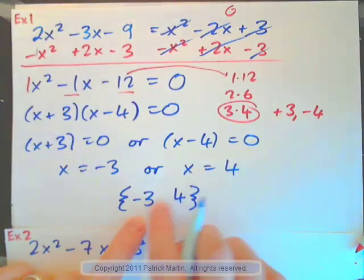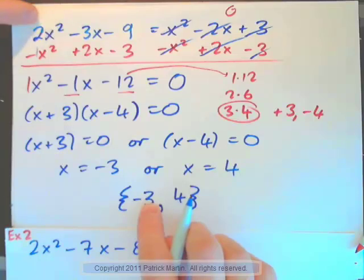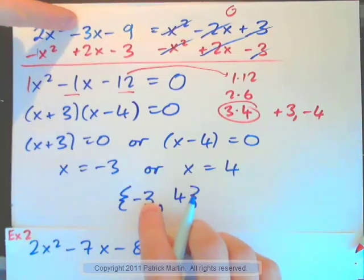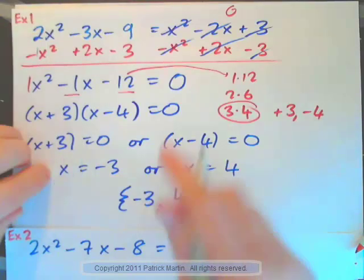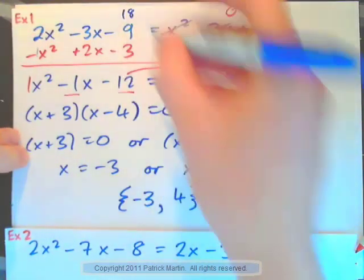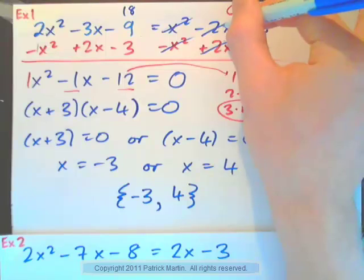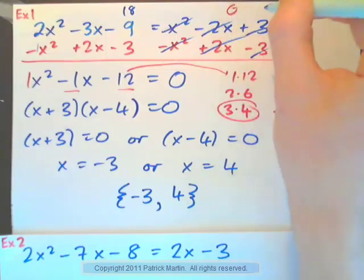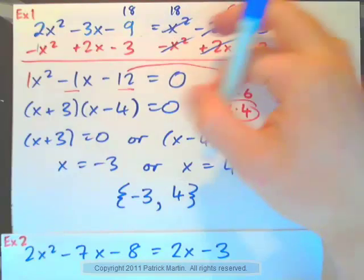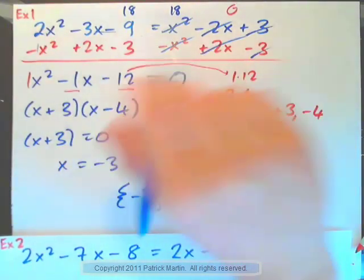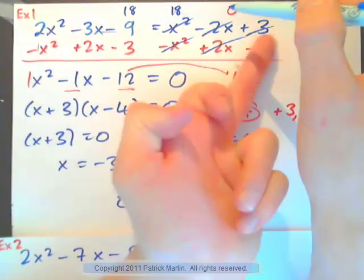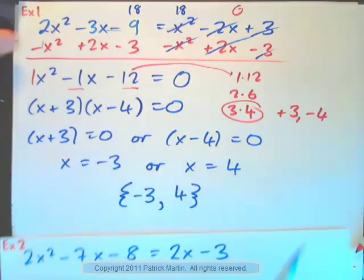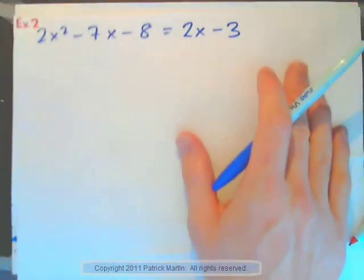And if you plug, say, negative 3 into the left-hand side, you get 2 times 9 is 18. 18, this would be positive 9. 27 minus 9. So, this had left-hand side to be 18. Plug negative 3 in here. This is 9 and 6. 15. 15 and 3 is 18. So, you'll find that negative 3 works. And if you plug 4 in, you'll get the same thing on both sides also. So, feel free to put each number in for x and check your answer, especially if you're taking a test.